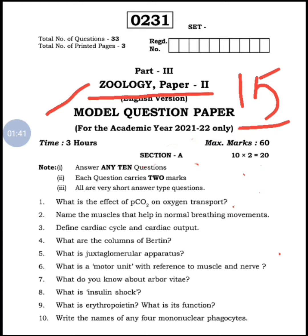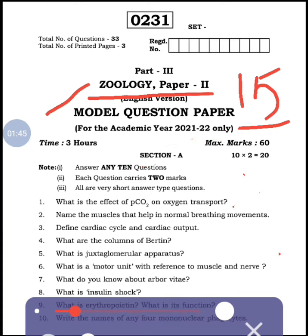First question: What is the effect of pCO2 on oxygen transportation? It is from Chapter 1B, breathing and exchange of gases. Second question: Name the muscles that help in normal breathing movement - also from 1B. Third question: Define cardiac cycle and cardiac output - that is from 2A. Fourth question: What are the columns of Bertini? - from 2B.